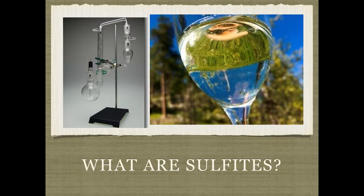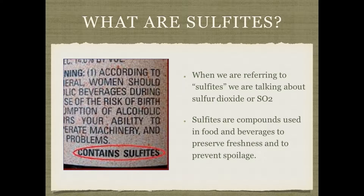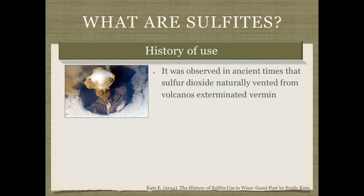What are sulfites? When we talk about sulfites, we're talking about sulfur dioxide or SO₂. Sulfites are used in food and beverages to preserve freshness and prevent spoilage, and alcoholic beverages are required to be labeled if they contain added sulfites. Sulfites have been used for a very long time — in ancient times, sulfur dioxide vented from volcanoes was observed to kill vermin such as rats, and people began using it to fumigate dwellings and ships.